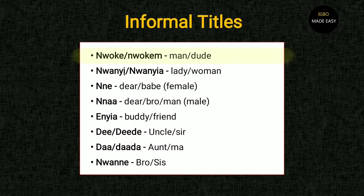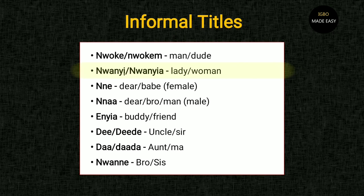Now we have nwokem. Nwokem is your male buddy or a younger male person you are friendly with — or a male person you are angry at. So you hear people say 'nwokem, get out of here' when they are angry. Depending on the tone of your voice it can be a term of friendliness or used when provoked — it's like saying 'man' or 'dude.' Similarly, nwanyi literally means woman, and nwanyia literally means 'this woman,' usually said to a married or mature woman.